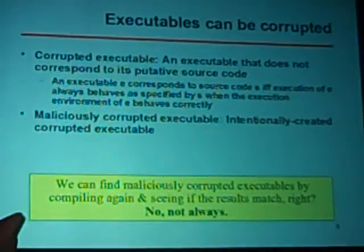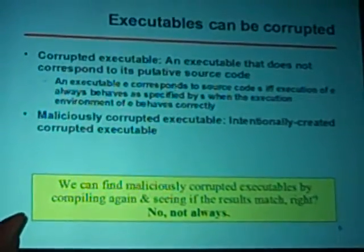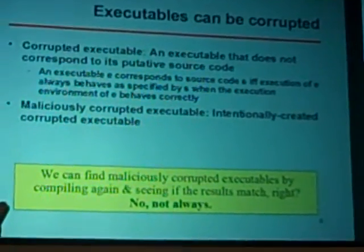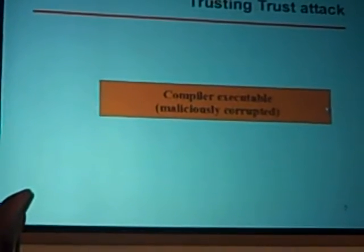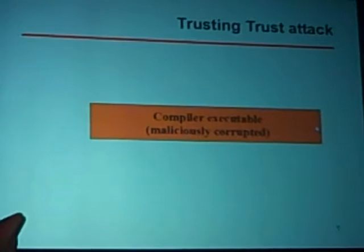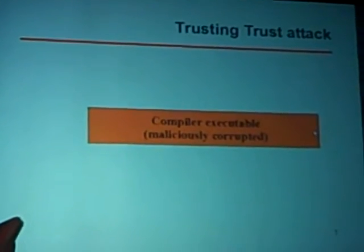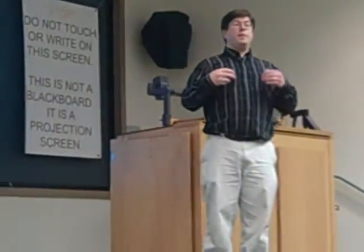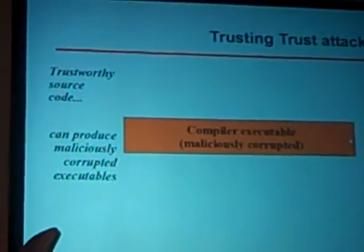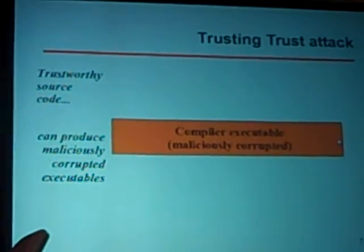We could detect corrupted executables just by recompiling and checking if the resulting executable was the same. But unfortunately, that's not always true — and this leads us to the trusting trust attack. What happens if the compiler itself is maliciously corrupted? We use the compiler to translate source code into executables, but executables are the only thing the computer can actually execute. So what the human sees and what the computer executes could be different.